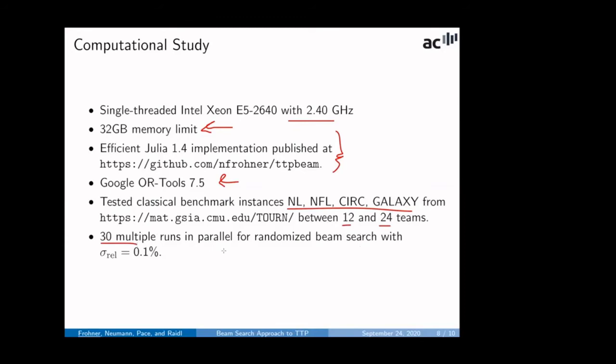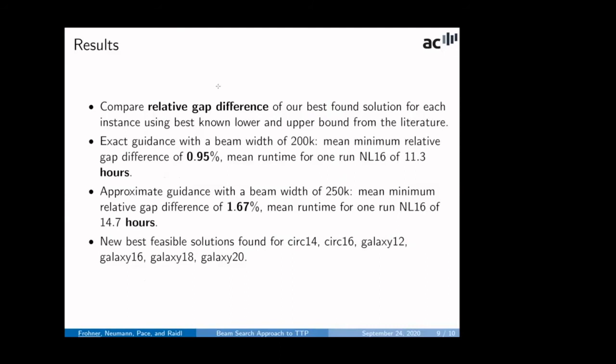And we run 30 multiple runs in a parallel randomized beam search with some gentle noise added to each node heuristic value. What are the results? We compare with the best found solutions as reported in the literature and on Mike Trick's web page. And we compared a relative gap difference between the literature and our best found results. So, when we use this exact guidance, solving CVRPs exactly, with a beam width of 200,000, then we get this mean, minimum relative gap difference of slightly below 1%, and the runtime for 16 teams instance, exemplary, of 11 hours. The approximate guidance has a slightly worse relative gap difference, 1.67%, but still comparable, competitive, and the mean runtime a little bit higher of 14.7 hours.